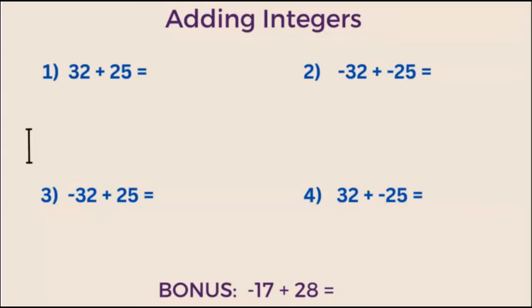There are three scenarios that you could use when adding integers: adding two positive integers, adding two negative integers, or adding both positive and negative integers. Let's look at a few examples of these scenarios.